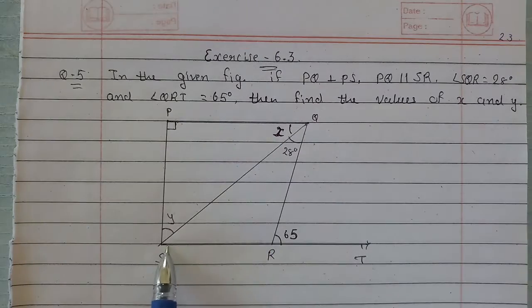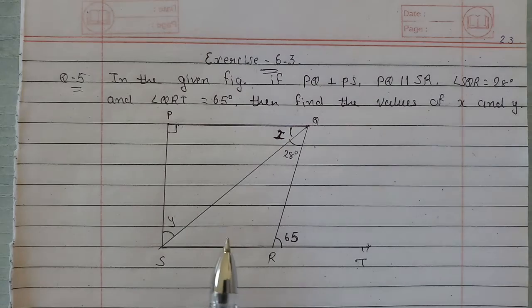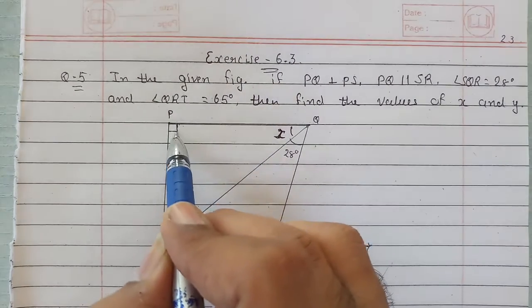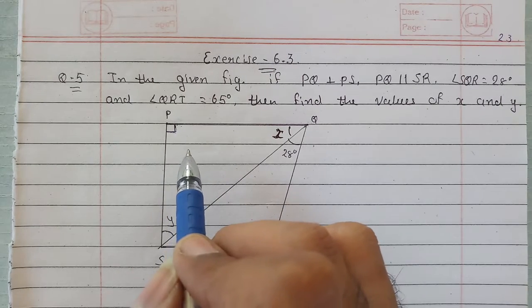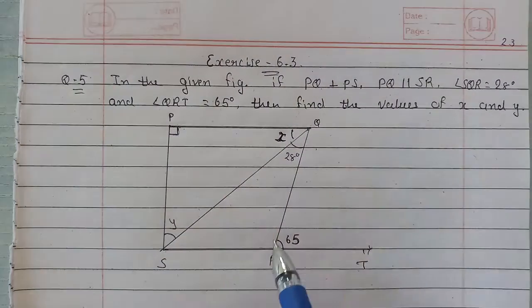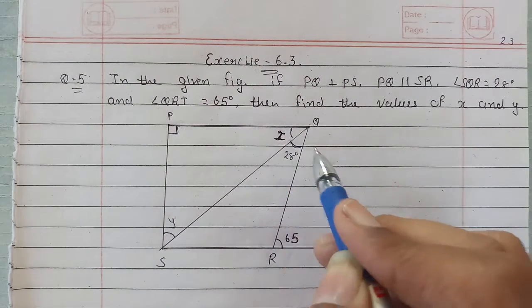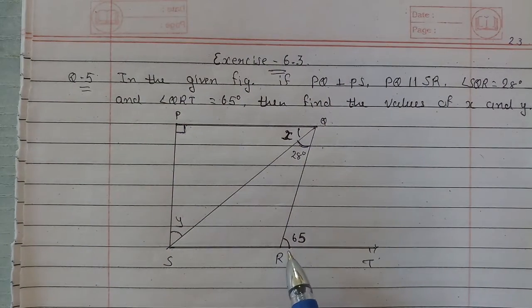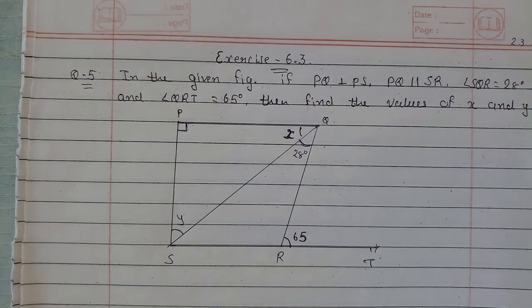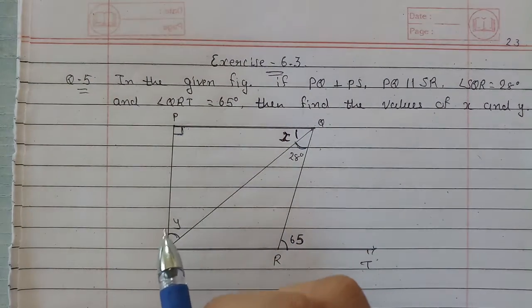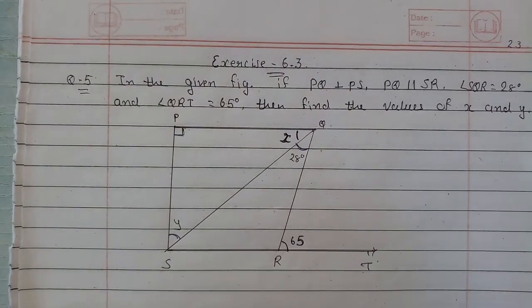What we have given is two lines PQ and SR that are parallel to each other. Then PQ is perpendicular to PS. Angle SQR is equal to 28 degrees and angle QRT is 65 degrees. So we need to find x and y.